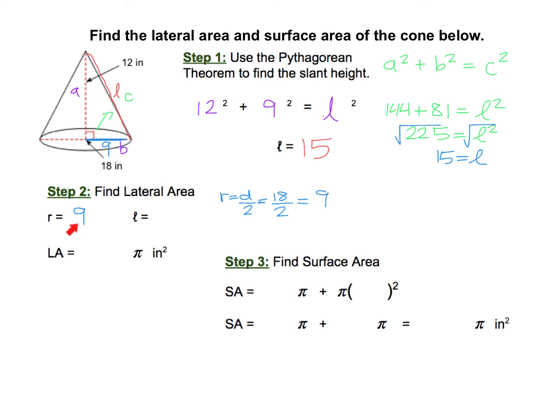And now we can move on to step two, finding the lateral area. We already have the r, which is 9, and we just found the slant height to be 15. So now to calculate the lateral area, we use our formula. Lateral area equals pi r l. So that's pi times 9 times 15. And 9 times 15 is 135. So we have 135 pi as our lateral area, and in your interactive notebook, the pi symbol's already there. You just need to type the 135 right there for step two.